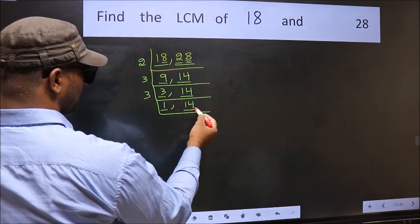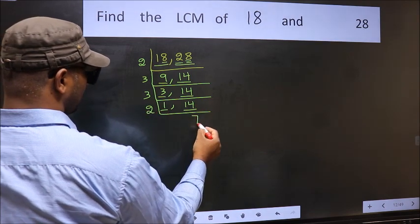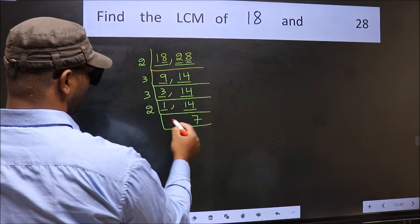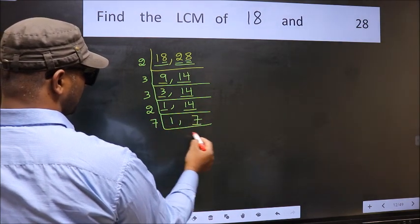Now we got 1 here. So focus on the other number 14. 14 is 2 sevens, 14. Now we have 7. 7 is a prime number. So 7 ones, 7.